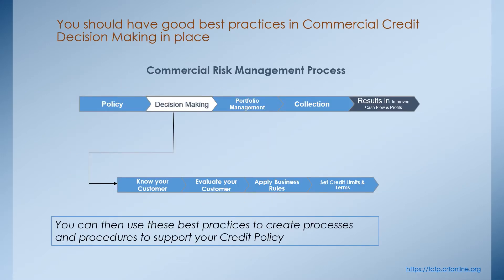Our recommendation is to have good best practices in commercial credit decision making that cover four key areas — shown at the bottom of the screen. They include knowing your customer, evaluating your customer, applying business rules, and setting credit limits and terms. These best practices should be the processes and procedures to support your credit policy — those things you've stipulated about how you will evaluate and extend credit to new customers. We're going to cover these four areas at a relatively high level today, and we do have a more detailed full session that gets into these four areas in much more detail.